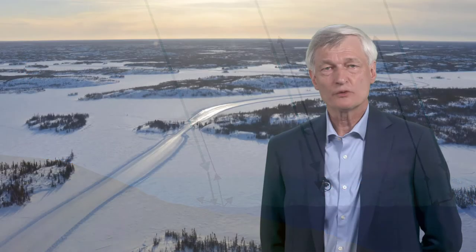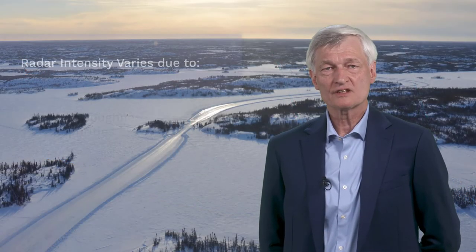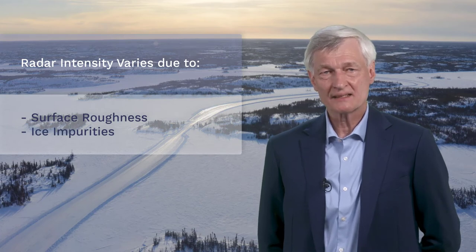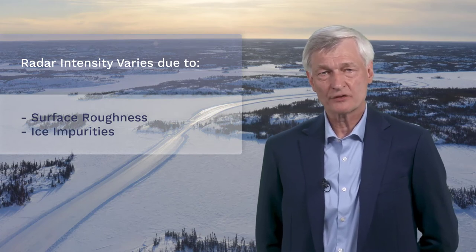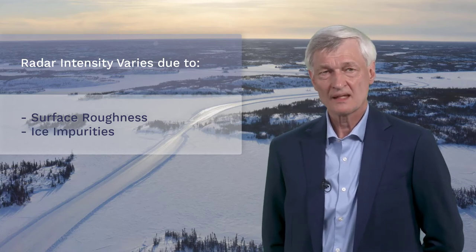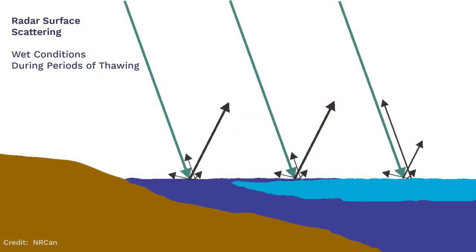The backscatter intensity will vary as a function of the roughness of the ice-water surface, as well as of the size, density, shape and orientation of the ice impurities. In contrast, thawing conditions cause the snow and ice complex to become wet and therefore impenetrable to radar waves. For that reason, the interaction is limited to the air-snow or air-ice interface and only takes the form of surface scattering.